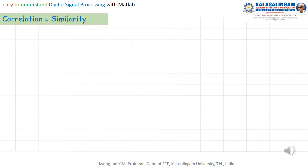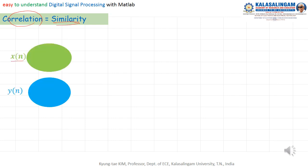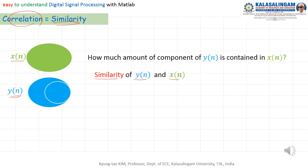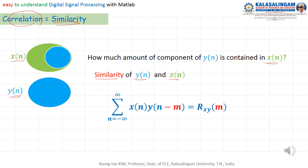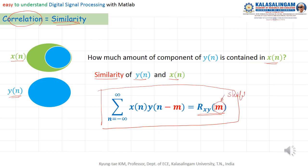As I mentioned in the last lecture, let me review one more time: the concept of correlation is similarity. There are two signals, x(n) and y(n). How do we measure similarity? Similarity means how much of the component of y(n) is contained in x(n). This similarity is expressed by the cross-correlation function, which is a function of the shift parameter m.